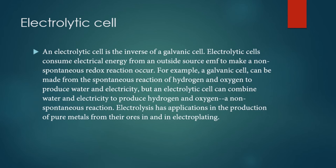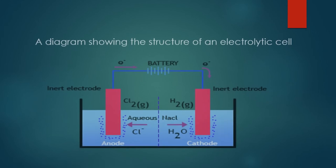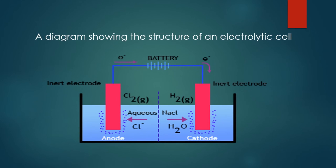An electrolytic cell can be used for the production of pure metals from their ores and in electroplating. We will discuss the applications of electrolytic cells in the next videos. Here is an example of the construction of an electrolytic cell: this cell is used to obtain chlorine and hydrogen gases from the electrolysis of sodium chloride solution.